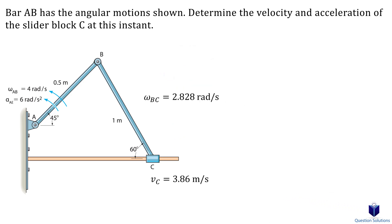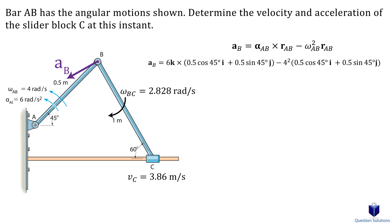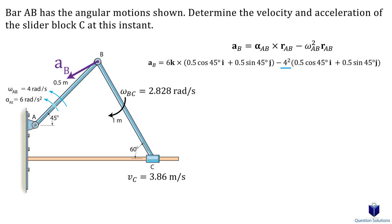Now we can focus on the new stuff: finding the acceleration of slider C. Just like we found the velocity of point B first, we need to find the acceleration of point B using this equation from the section on rotation about a fixed axis. Let's plug in the values: the angular acceleration is 6 rad/s² about the z-axis, and the position vector r_AB is broken into two components using the 45-degree angle. The angular velocity is 4 rad/s with the same position coordinate. Don't forget: k cross i gives j, and k cross j gives negative i.